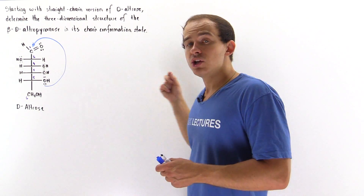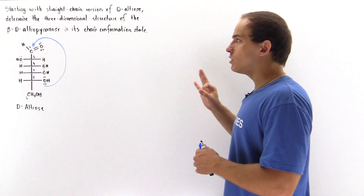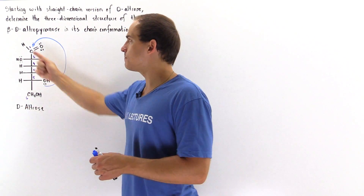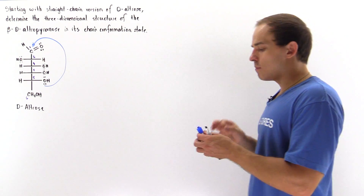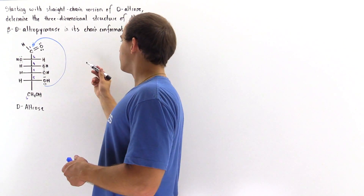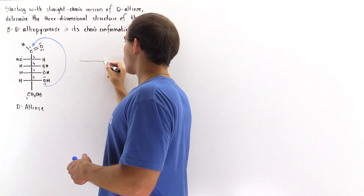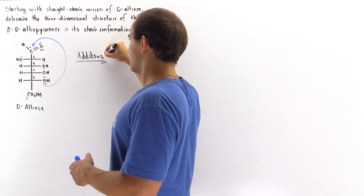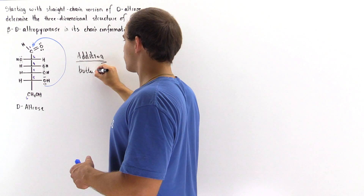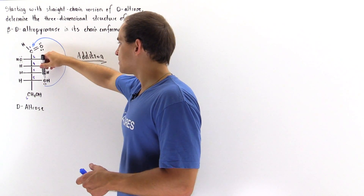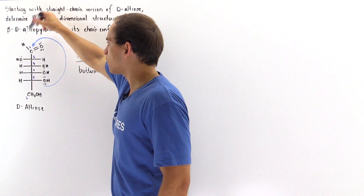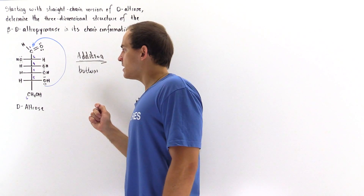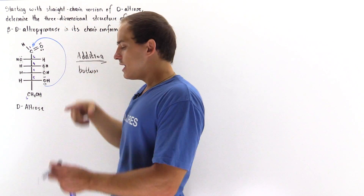The nucleophile can attack either from the top or the bottom. If we have a top-side nucleophilic attack, that leads to alpha-D-altropyranose. If it attacks from the bottom, that leads to beta-D-altropyranose. Since we're looking for the beta anomer, we undergo the bottom addition reaction. Once the bond between the oxygen on the fifth carbon and the first carbon is formed, we have deprotonation of this oxygen taking place, while this oxygen is protonated.